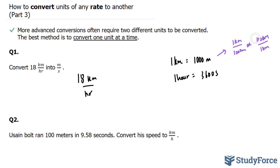Of these two versions, I'm going to use 1,000 meters over 1 kilometer. Because if I multiply by 1,000 meters over kilometers, the kilometers units will cancel out, and we're left with meters at the top, which is what we're looking for.